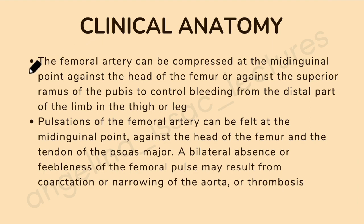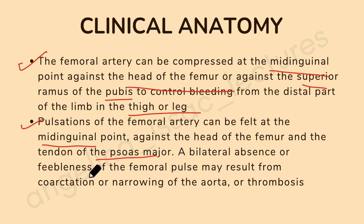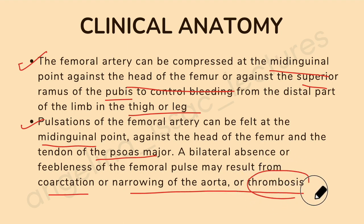To summarize the clinical anatomy: the femoral artery can be compressed at the mid-inguinal point against the head of the femur or superior ramus of the pubis to control bleeding from the thigh or leg. Pulsations can be felt at the mid-inguinal point against the head of the femur and the tendon of psoas major. Bilateral absence or feebleness of the femoral pulse may result from coarctation or narrowing of the aorta, or due to thrombosis.